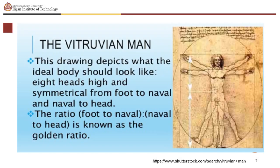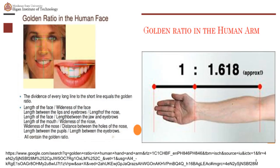The Vitruvian Man was drawn by Leonardo da Vinci, described by ancient Roman architect Vitruvius in Book 3 of his treatise De Architectura. It indicated that the human figure is the principal source of proportion among the classical orders of architecture. The mouth and nose are each positioned at golden sections of the distance between the eyes and the bottom of the chin. Similar proportions can be seen from the side, and even in the eye and ear itself.